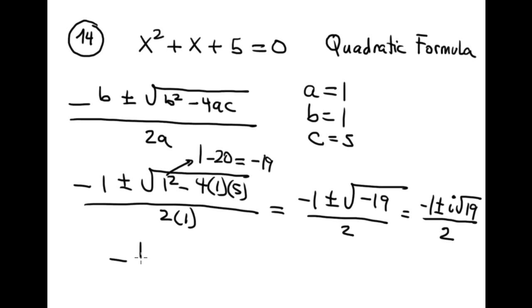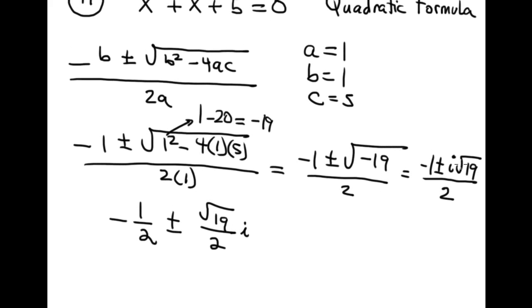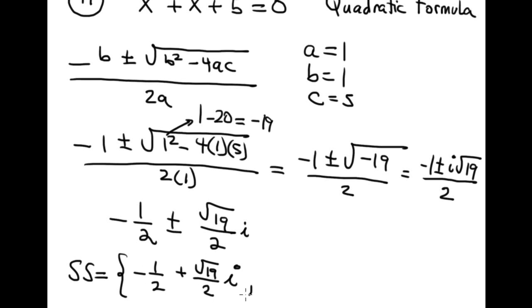Separating the real and imaginary parts: −1/2 ± (√19 / 2)i. The solution set is two complex conjugate solutions: { −1/2 + (√19/2)i, −1/2 − (√19/2)i }. That's it.